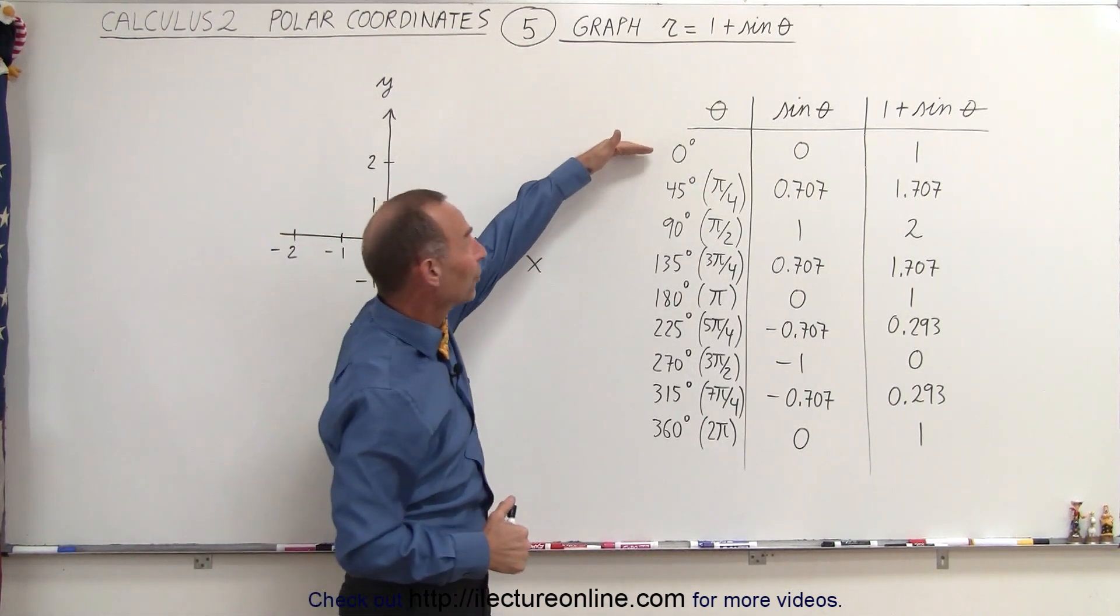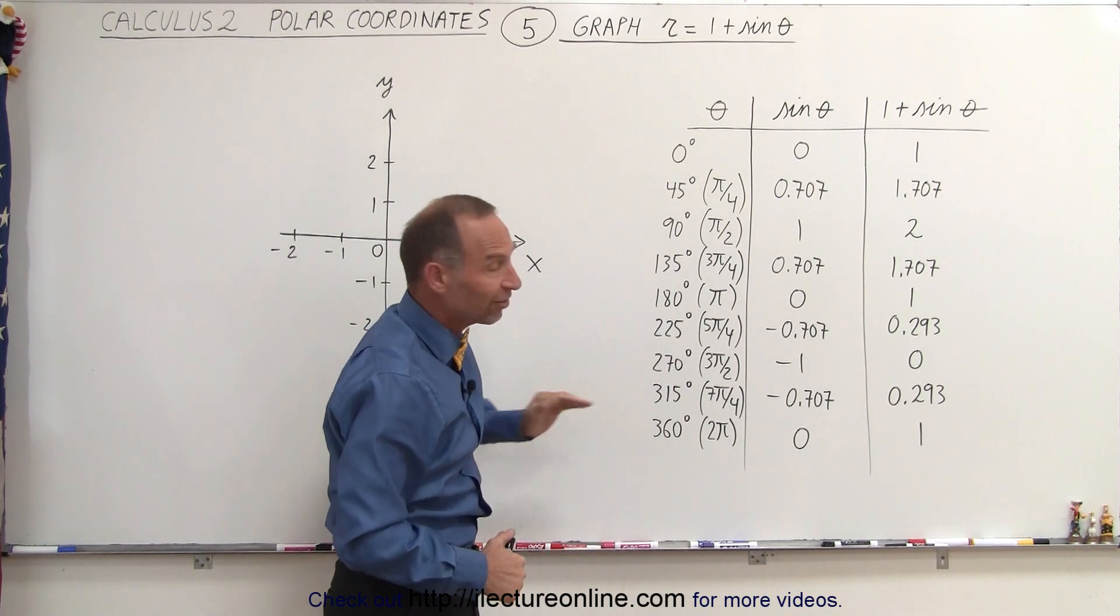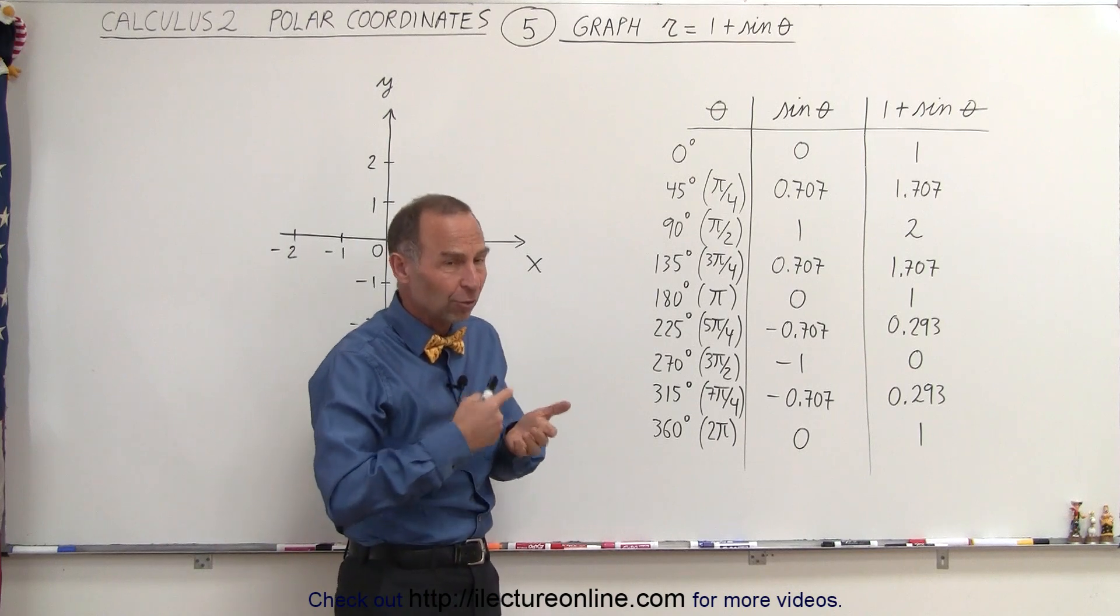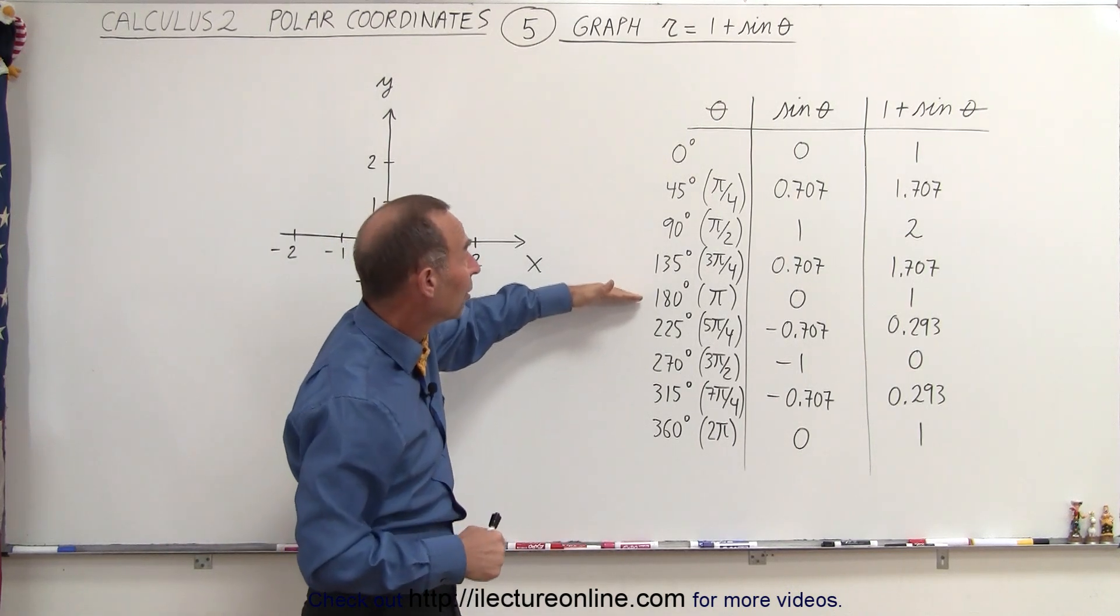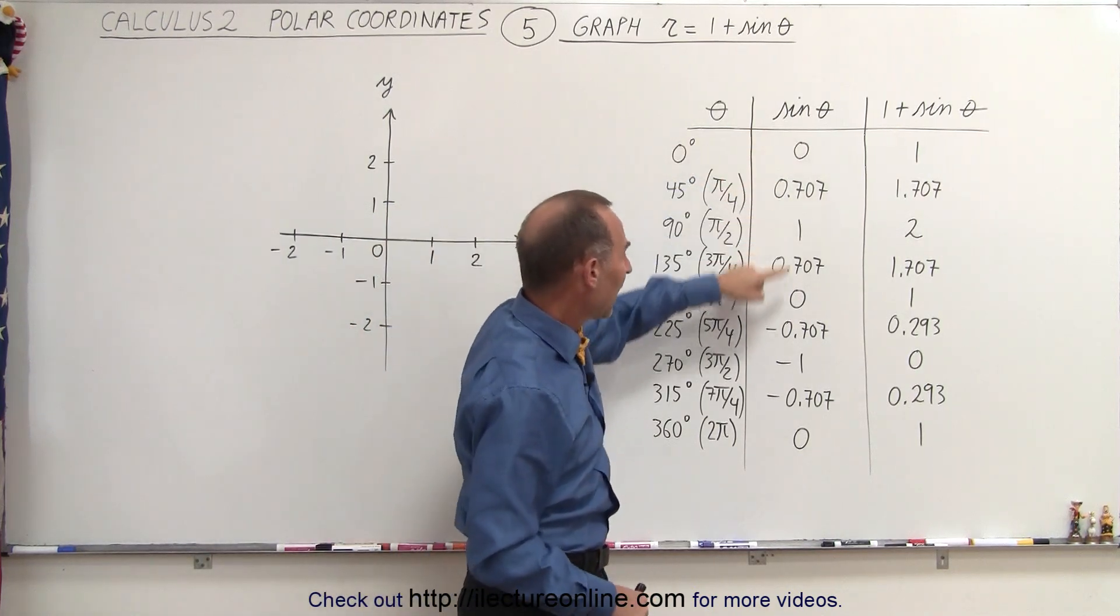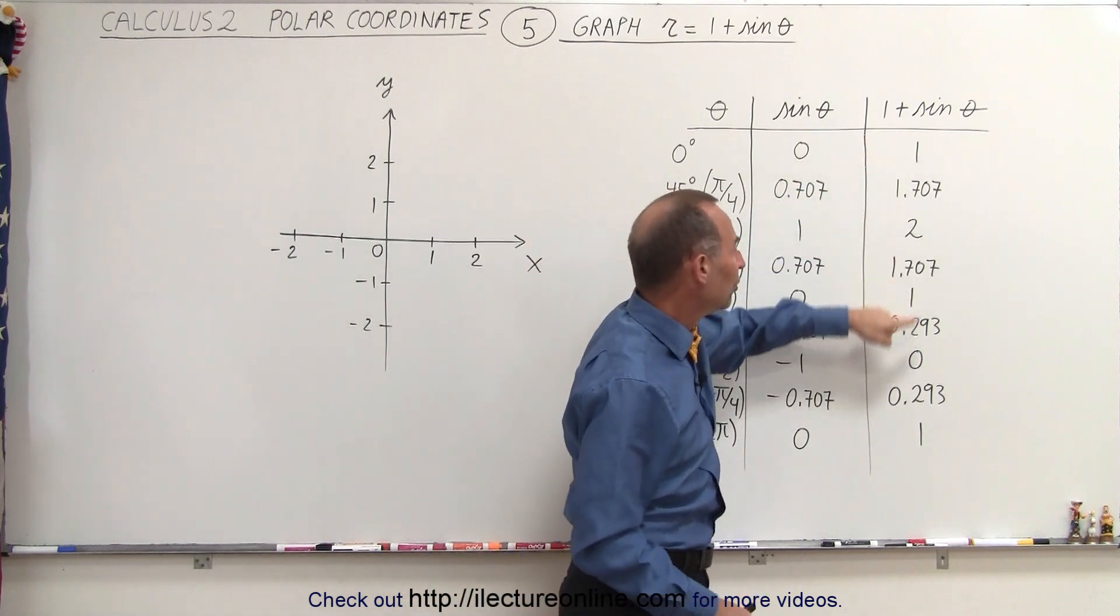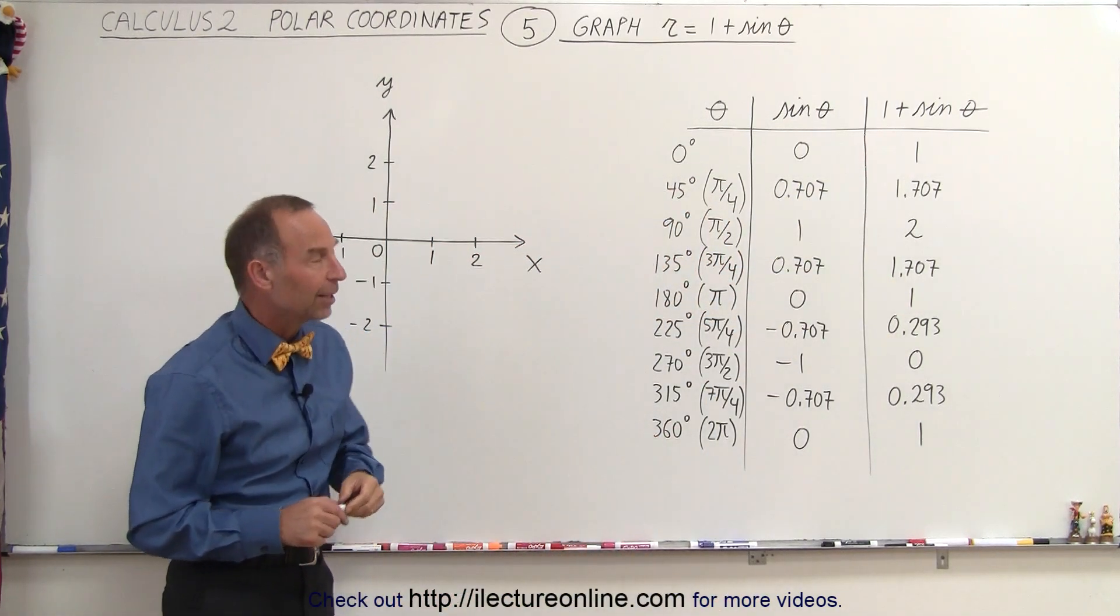We start with the angle theta, 0 degrees. Typically, we want to go all the way to 360 degrees, unless the function repeats itself after we reach 180 degrees, like we saw in the previous video, but here we'll need to go all the way from 0 to 360 degrees. We find the sine of that angle, and then we add 1 to that in each case, because r equals 1 plus the sine of theta.